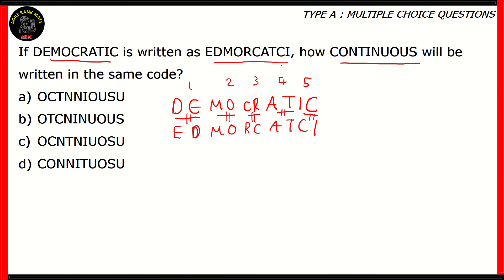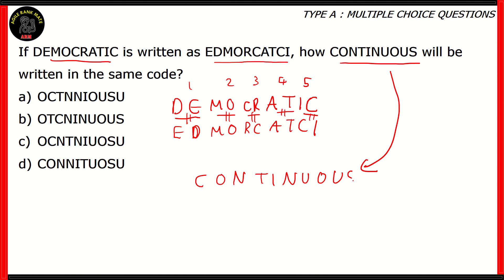So how would CONTINUOUS look using this code? C-O-N-T-I-N-U-O-U-S. Let's pair them up: C-O is one pair, N-T is another, I-N is another, U-O is another, and U-S is the final pair. Let's number them so we know which ones to change. The first pair is C-O. According to the pattern from DEMOCRATIC, we'll have to interchange the letters' positions, so C-O becomes O-C.